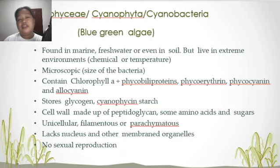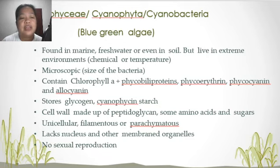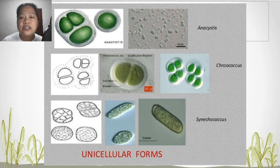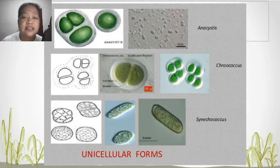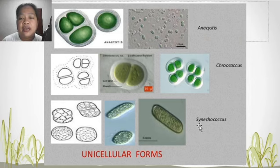There is no sexual reproduction in cyanobacteria — reproduction is mainly asexual through binary fission. Genera found in cyanobacteria include Anacystis, Chroococcus, and Cyanococcus, which are unicellular forms.